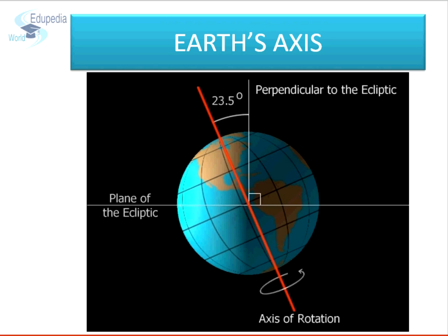The axis on which the earth rotates is not vertical. If the axis were vertical, then every place on the earth would have 12 hours of daylight and 12 hours of darkness daily. But this is not true — we know there are more hours of sunlight during summer than during winter, especially in places far from the equator. The poles experience six months of complete daylight followed by six months of darkness. The reason for this lies in the inclined axis of the earth.